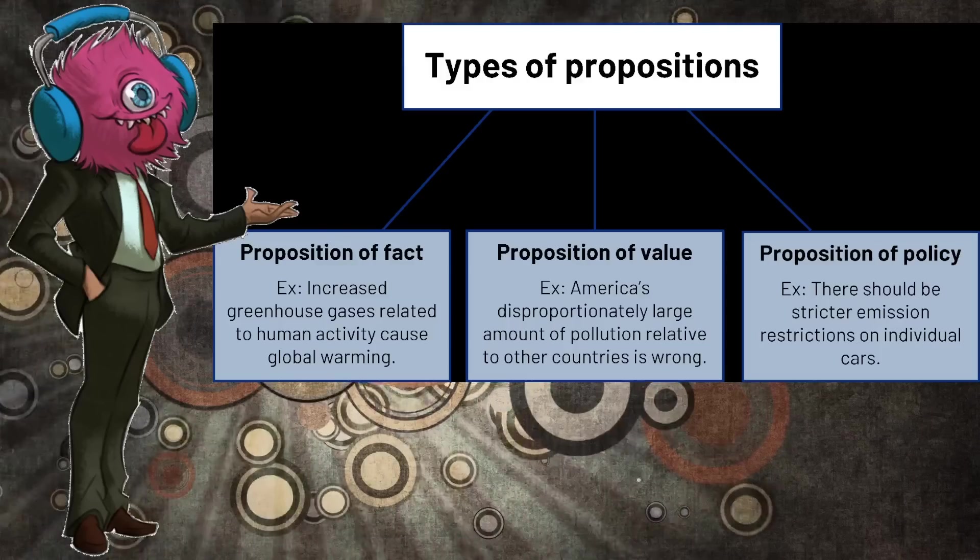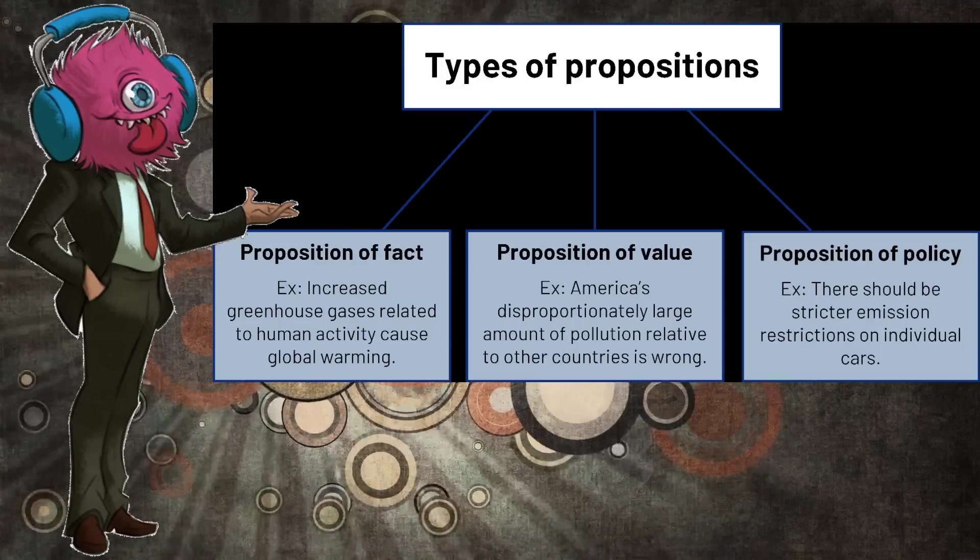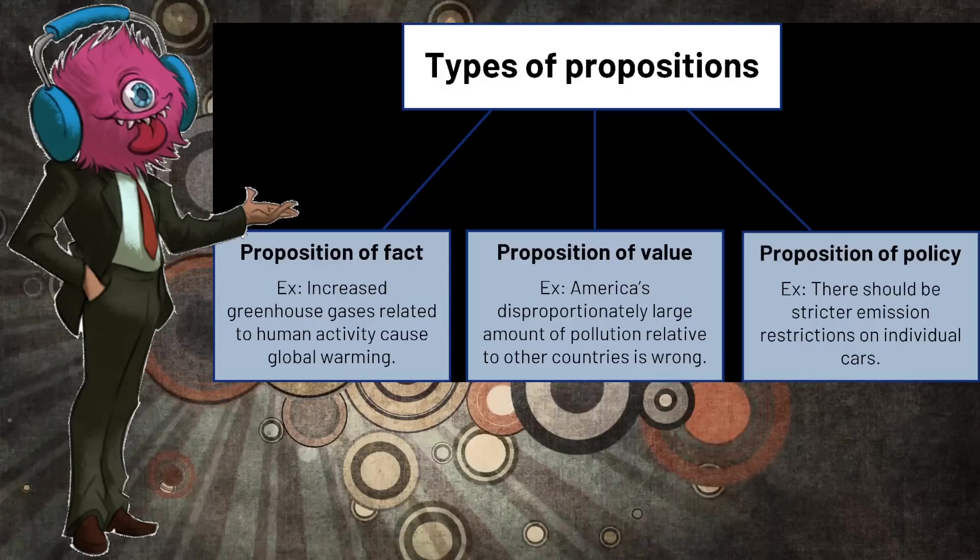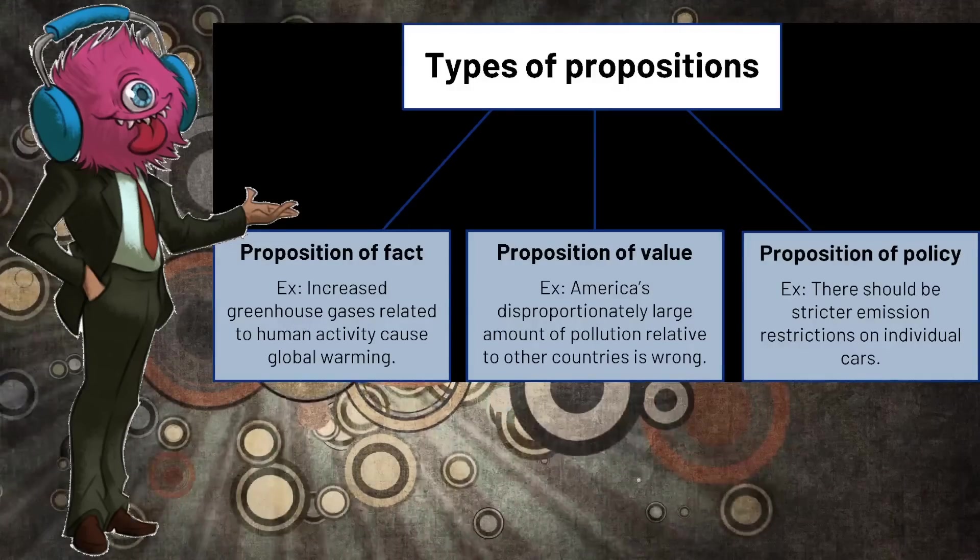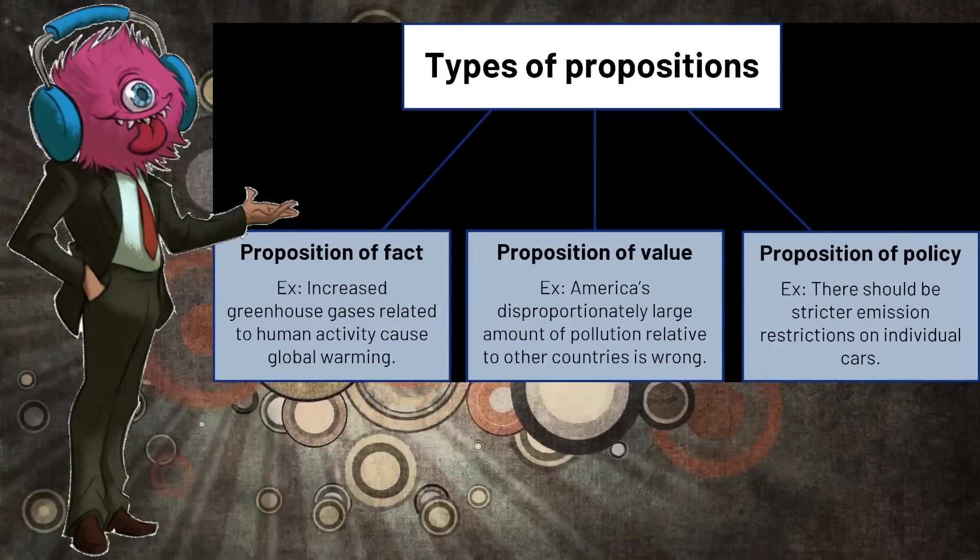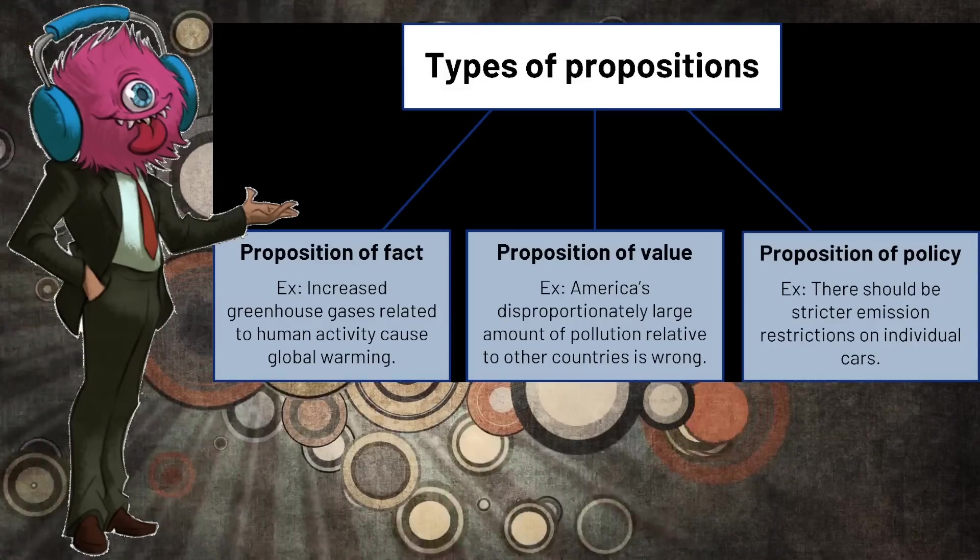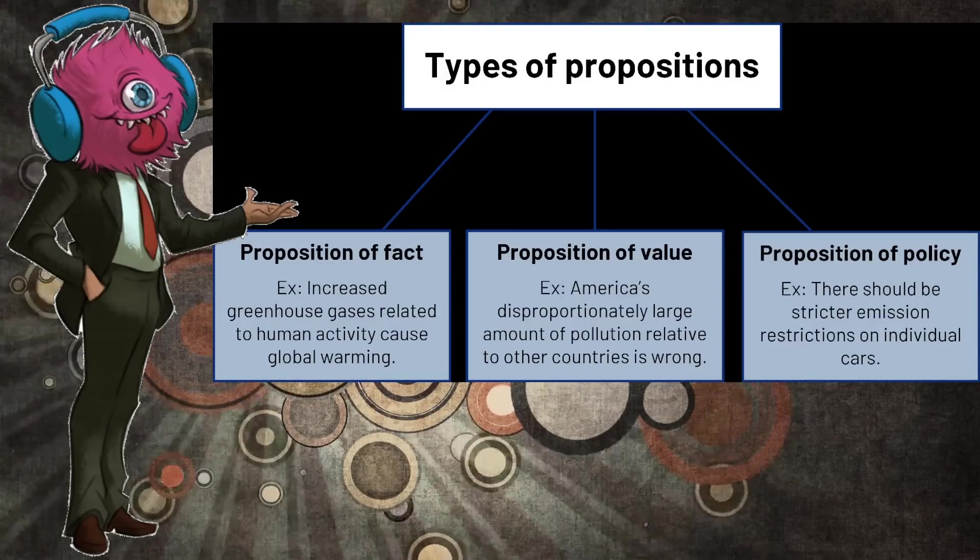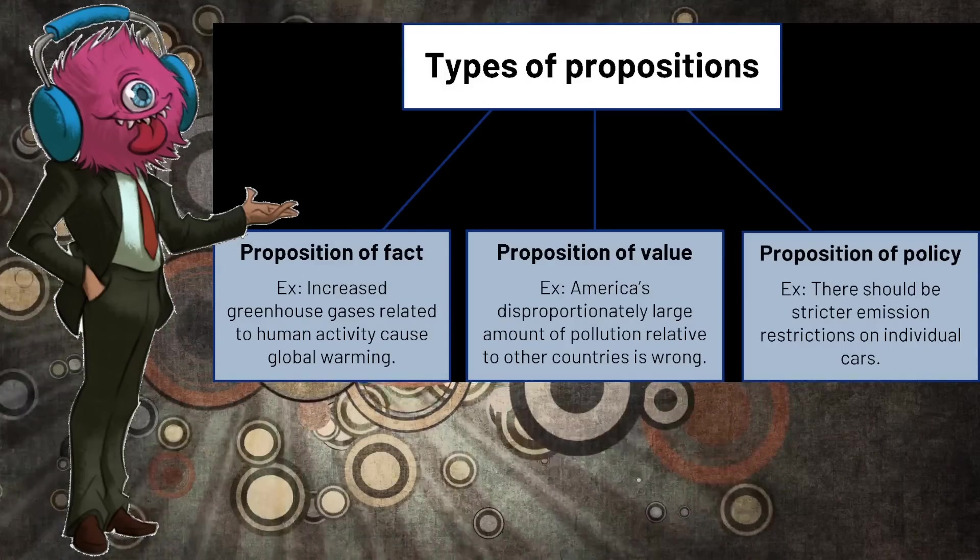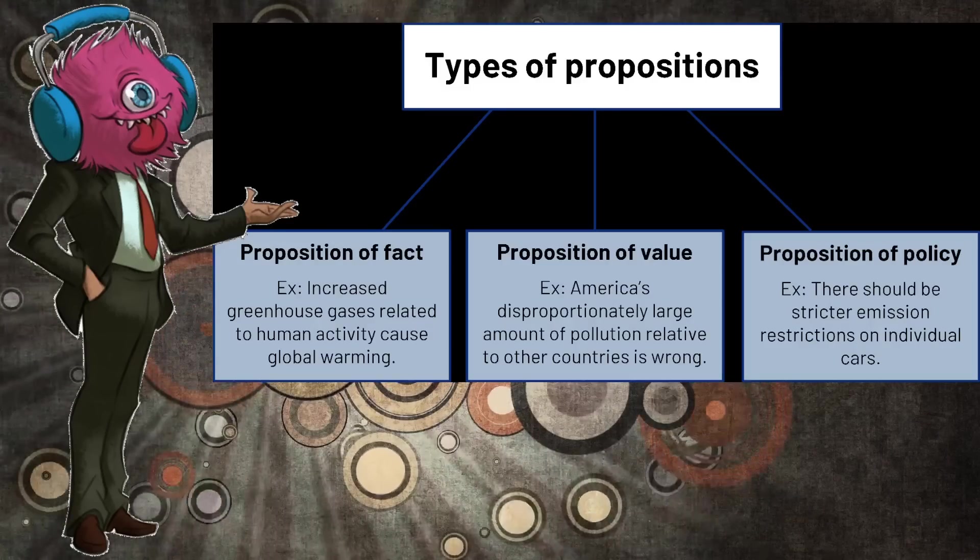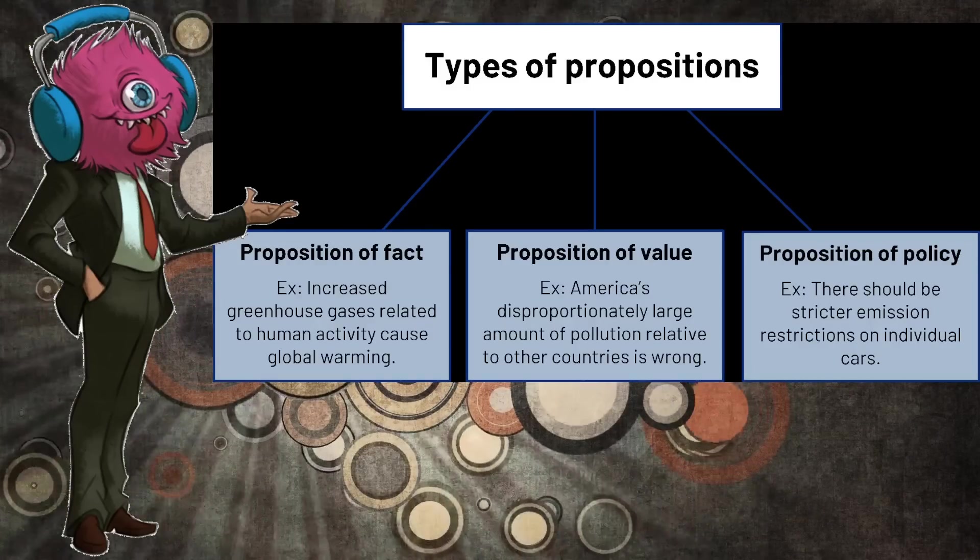So, a statement like the earth is round is a proposition of fact. A statement like murder is wrong, however, is a proposition of value. As they are fundamentally different types of arguments, you cannot use the same approach to trying to prove them both in the same way. Yes, you would use images or measurements for the shape of the earth because that is evidence to establish a fact. But with a value judgment, there's no such fact to support. It's opinion.